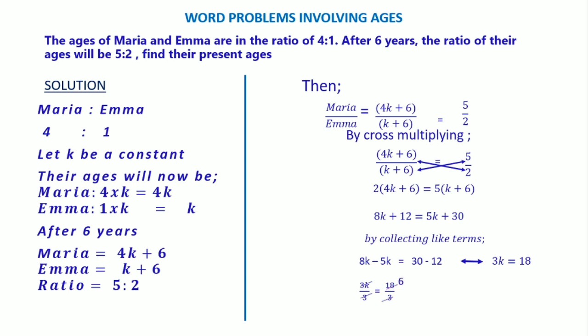If you read up the value of k, you see the ages of Emma and Maria. They're asking for their present age. Maria now is 4k, so we multiply 4 times 6, which is 24 years. And Emma will give us k, which is 1 times 6, which is 6 years.